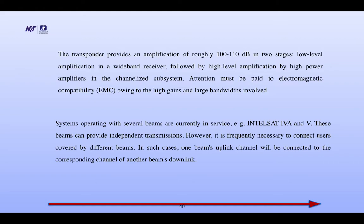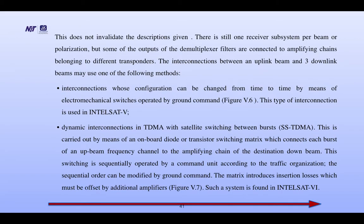Systems operating with several beams are currently in service, i.e., Intelsat 4A and 5. These beams can provide independent transmissions. However, it is frequently necessary to connect users covered by different beams. In such cases, one beam's uplink channel will be connected to the corresponding channel of another beam's downlink. There is still one receiver subsystem per beam or polarization.